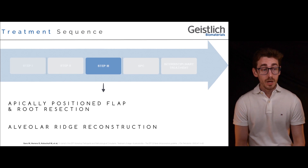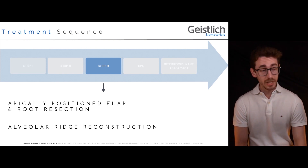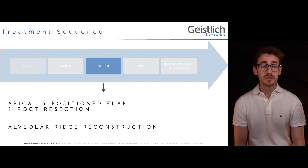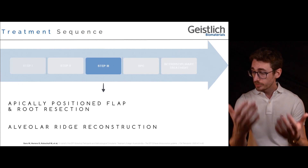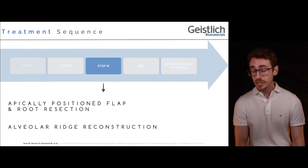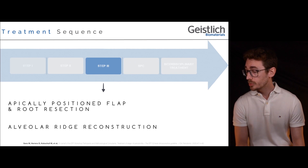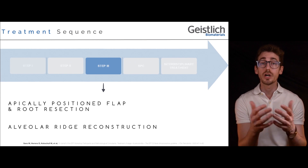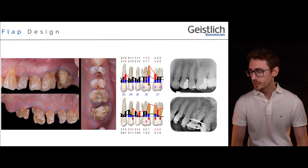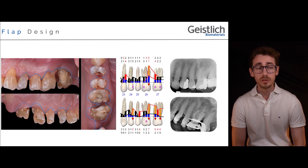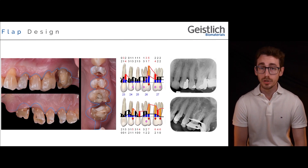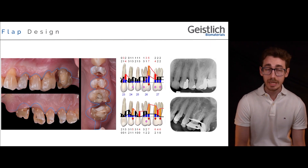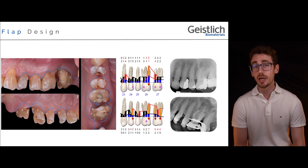We move to step 3 of therapy, where an apically positioned flap is planned, considering the probability of amputating the distal root of tooth number 26 in the case that loss of attachment extended up to the root apex is confirmed intraoperatively. In such a case, an immediate reconstruction of the alveolar ridge will be performed to avoid soft tissue collapse within the alveolus of the distal root. The procedure starts with a combination of a rectangular distal wedge operation at the level of the tuberosity, combined with a thin palatal flap on the palatal aspect and an access flap on the buccal aspect.